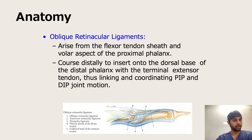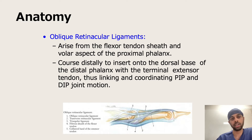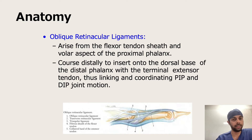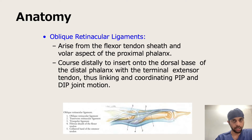The last structure is the oblique retinacular ligament. It usually arises from the flexor tendon sheath and the volar aspect of the proximal phalanx, and courses distally to insert on the dorsal base of the distal phalanx with the terminal extensor tendon. Thus it is very important in linking and coordinating the PIP and the DIP joint motion. That was basically the anatomy — you have to go through it again to understand exactly where the tendons are attached, but this is the basic foundation you need.